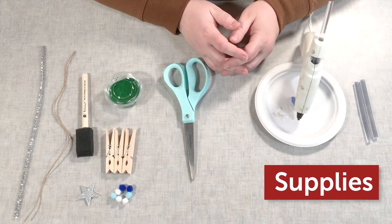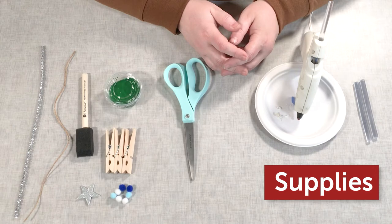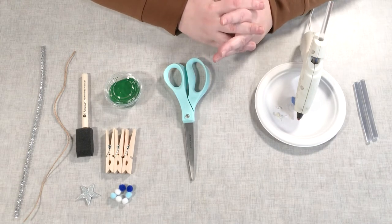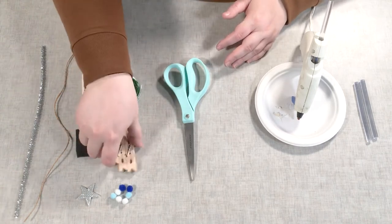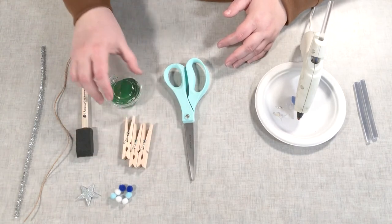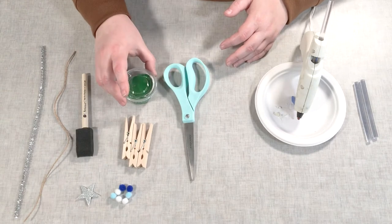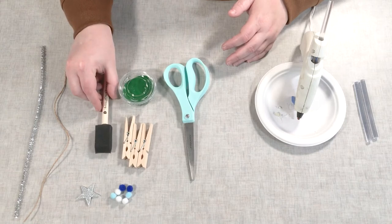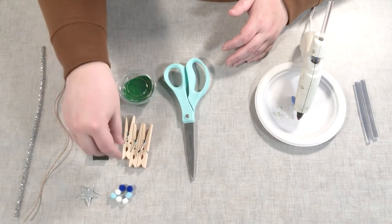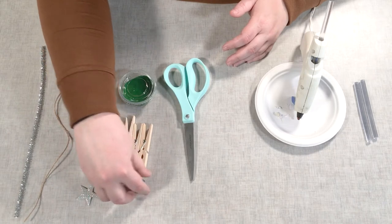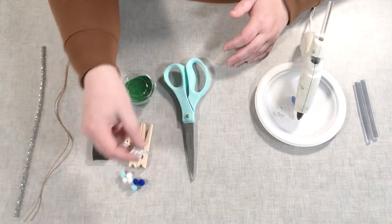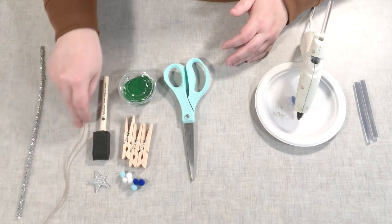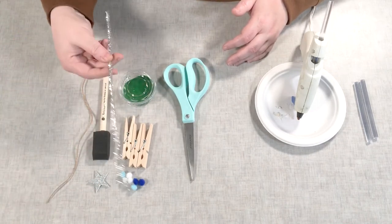If you registered for this craft and received a craft kit, you are going to have the following supplies in that bag. You will receive three clothespins, some green acrylic paint, a small foam paint brush, some small multicolored pom-poms, a metallic star, some twine, and a metallic pipe cleaner.